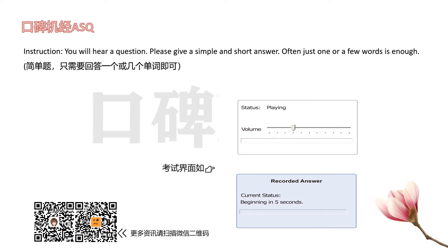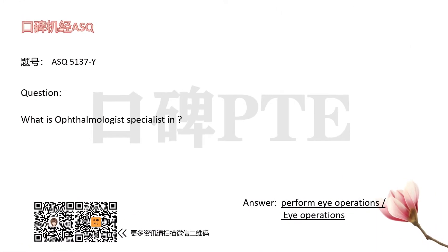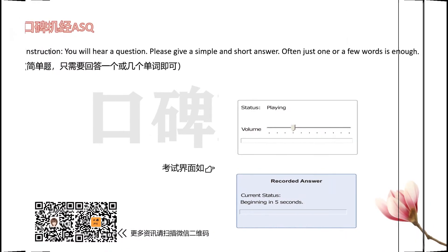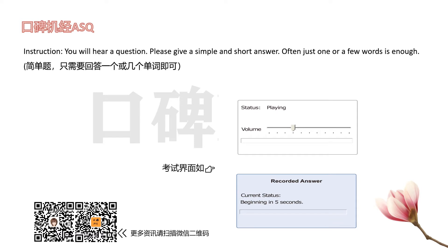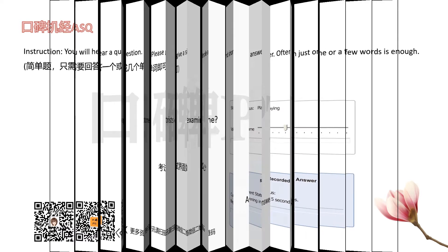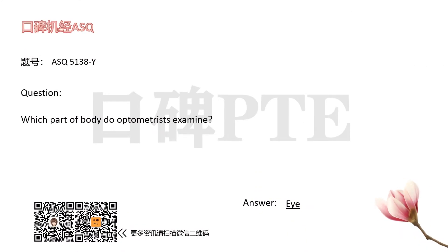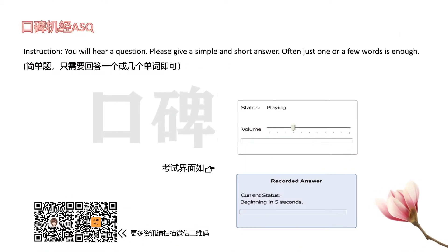What does an ophthalmologist specialize in? Which part of the body do optometrists examine? What organ do optometrists specialize in?